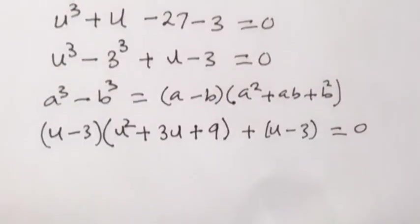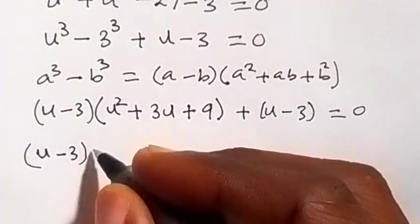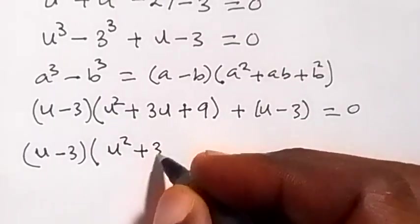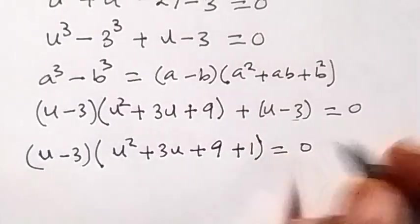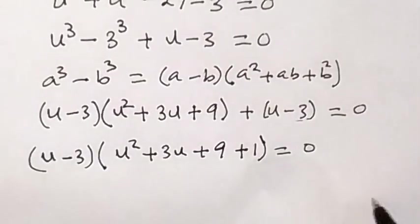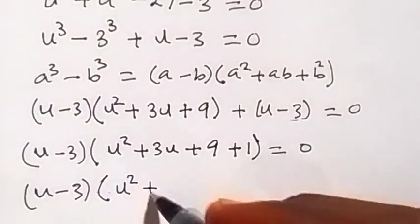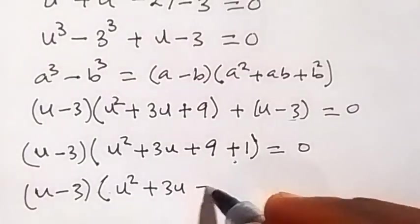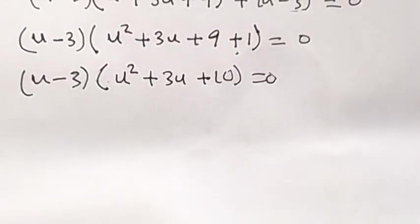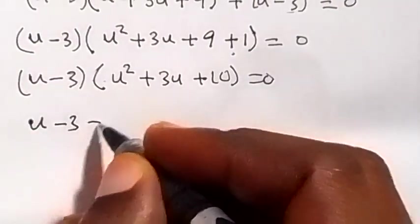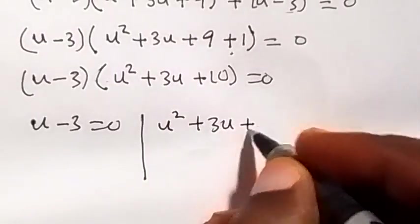From here we can see that u minus 3 is common, so we take it out. We have u minus 3, then what is left is u squared plus 3u plus 9, plus 1. Simplifying, we have u minus 3, times u squared plus 3u plus 10, which equals to 0. So we have u minus 3 equals to 0, and u squared plus 3u plus 10 equals to 0.